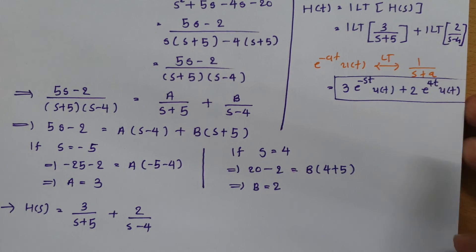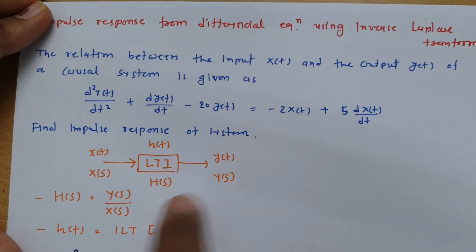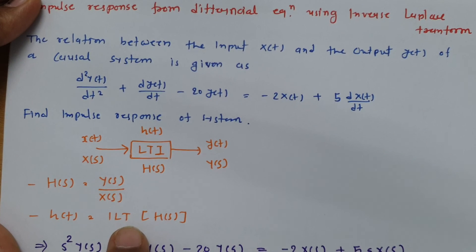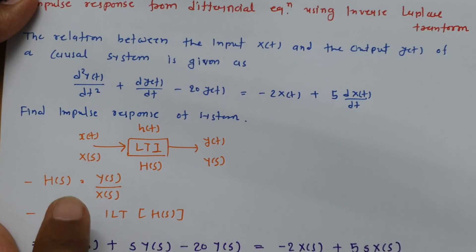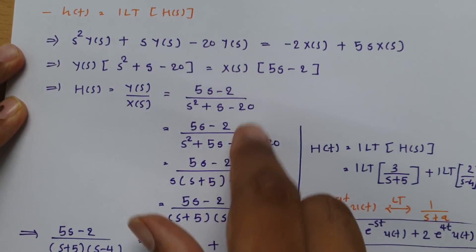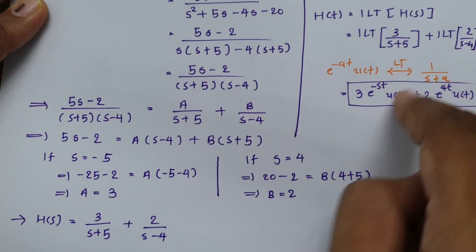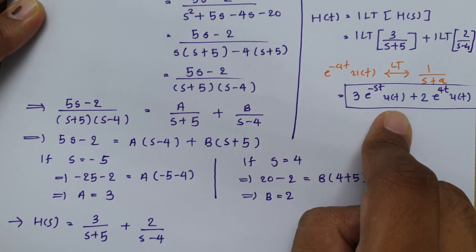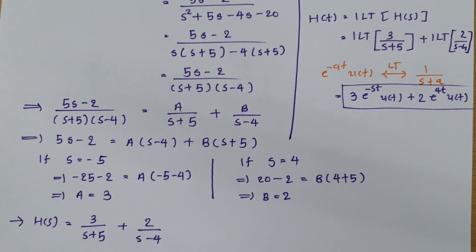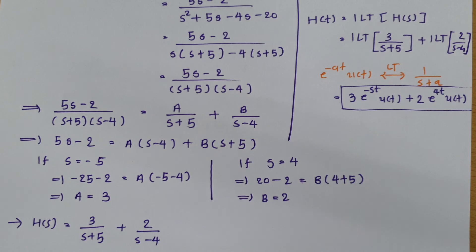In summary, whenever you solve this type of question, first identify the differential equation, then derive the transfer function H(s) = Y(s)/X(s), and finally take the inverse Laplace transform of that transfer function to get the impulse response. Partial fraction expansion was used to put H(s) in standard form before applying the inverse Laplace transform. I hope you have understood this session. Thank you for watching, and please give your valuable suggestions.